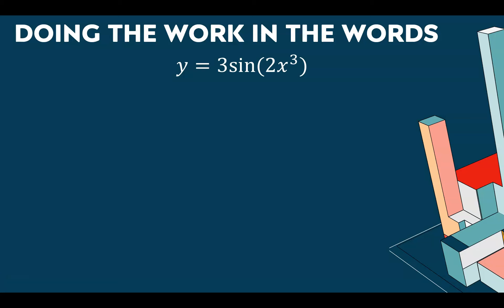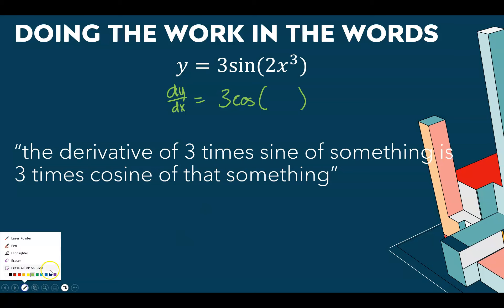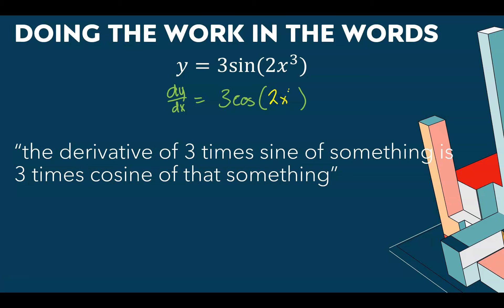Let's look at the structure here: we're always taking the derivative of the outermost thing first. The derivative of 3 sine of something is 3 cosine of the same something. And that something is 2x cubed, which has a rate of change of 6x squared.